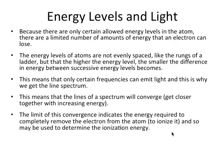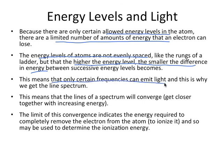Other points to note. There are only allowed energy levels, certain allowed energy levels in the atom. So there are a limited number of amounts of energy that an electron can lose. Those energy levels are not evenly spaced. But rather that the higher the energy level, the smaller difference between those energy levels. This means that only certain frequencies can emit light. And this is why we get the line spectrum. This also means that the lines of the spectrum will converge with increasing energy. It's also interesting that the limit of this convergence indicates the energy required to completely remove the electron from the atom. That is to ionize it. And we can use this to determine the ionization energy.